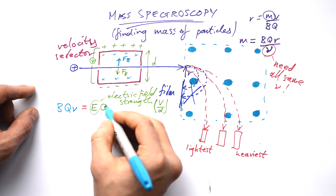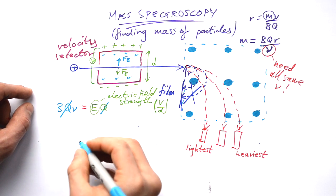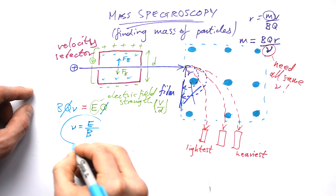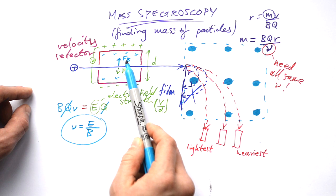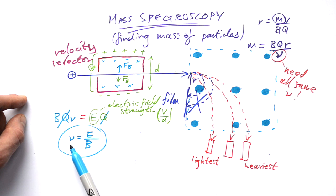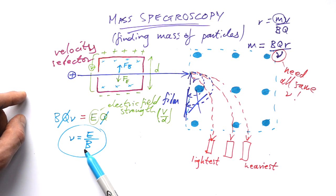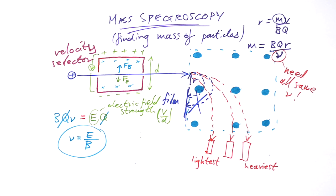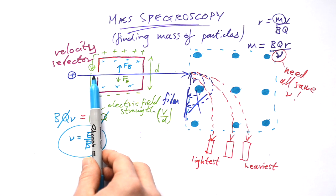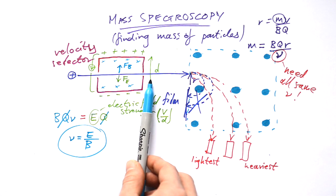When we cancel everything down, charge actually cancels out. Rearranging for v, we get v = E/B — the electric field strength divided by the magnetic flux density. In order for a particle to go straight through, it must have that specific speed. Notice this doesn't include mass at all, so it works regardless of particle mass. It also doesn't include charge, so it works for singly charged, doubly charged, or oppositely charged ions.